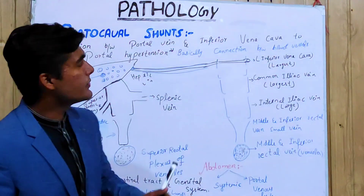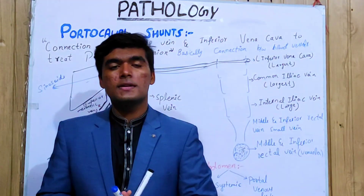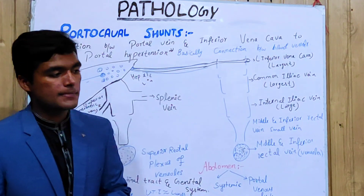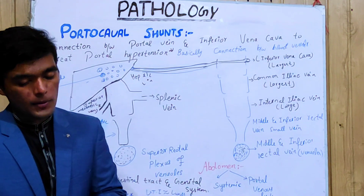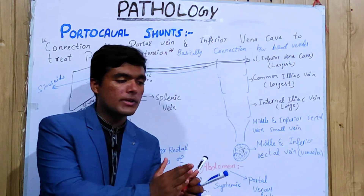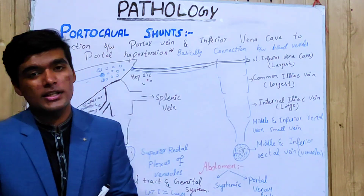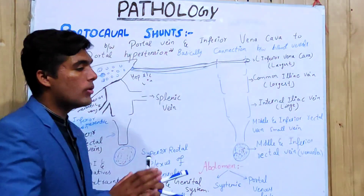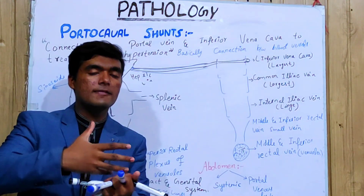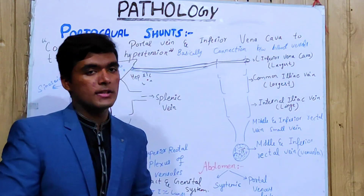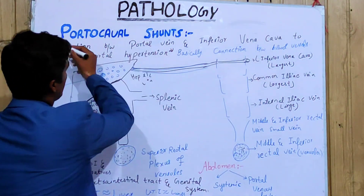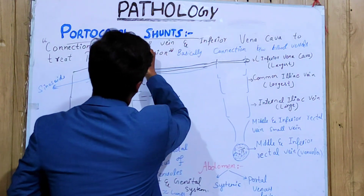Greetings everyone. Today we are going to talk about the pathology series, and in it we are going to particularly talk about portocaval shunt — what it is, how it is made, what its functions are, its clinical and non-clinical importance, and which veins are basically comprising and collectively forming this shunt, which is the portocaval shunt or porto venous shunt.